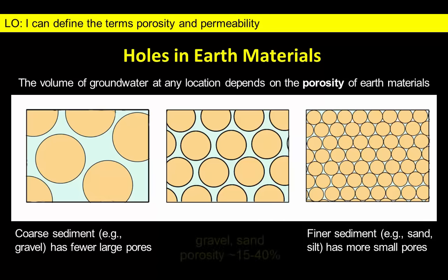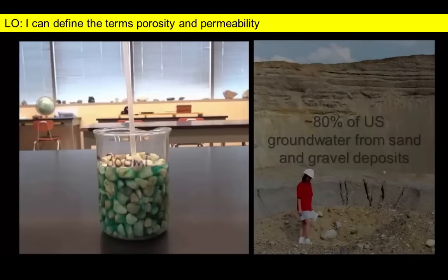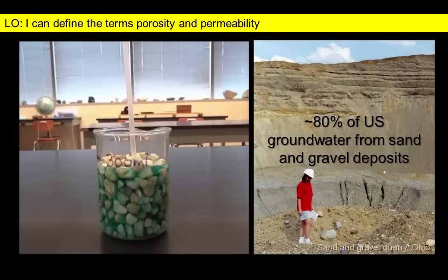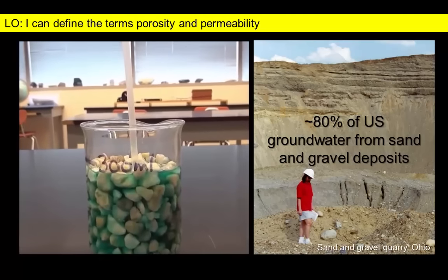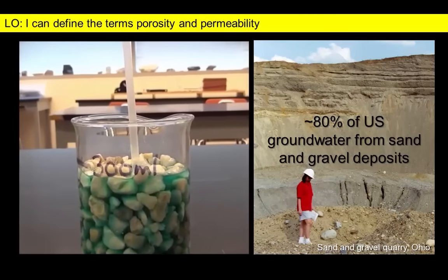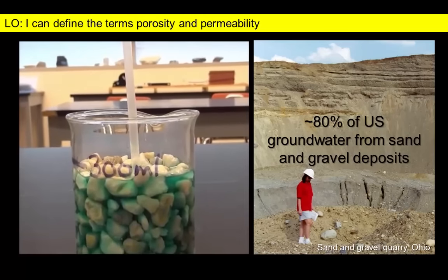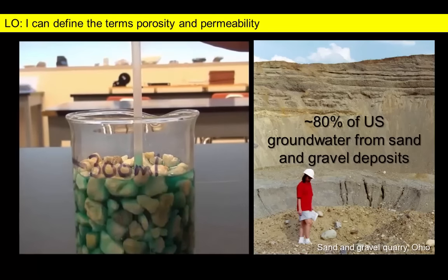Depending on how well these materials are sorted, they can have similar porosities. The porosity values are not unreasonable for unconsolidated gravels and sands near Earth's surface. About 80% of shallow groundwater systems in the U.S. are composed of these materials — sand and gravel. In most cases, we can extract the groundwater using wells, in much the same way that we would extract water from the gravel mixture using a straw.